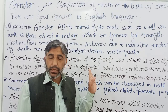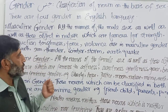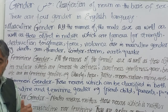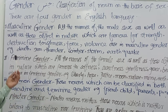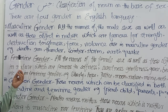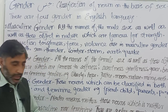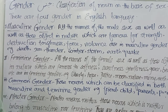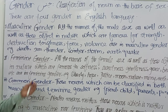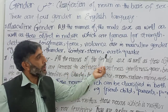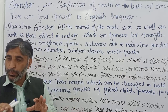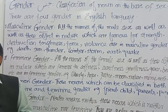Aslan to yeh bejaan cheezein hain, lekin chunki inki taqat, zulm, aur force zahir hoti hai, to baz awqat muzakkar jins ke taur par istemal hoti hain. Jaise: 'Death lay his icy hand on kings and everyone' — yahan 'death' ke liye 'his' istemal hua jo muzakkar hai. Isi tarah sun, thunder, winter, storm, earthquake — yeh sab bhi muzakkar ke taur par istemal hote hain.